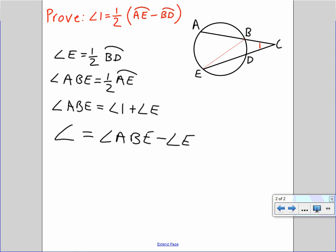And coming back up to our original two statements of the proof, we can substitute in and show that angle 1 is equal to, well, ABE is half of arc AE and angle E is half of arc BD.